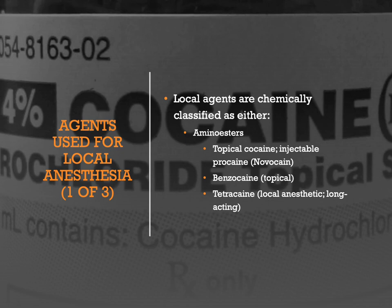Tetracaine is also classified as an amino ester and is a potent, long-lasting local anesthetic often administered prior to cataract surgery. It may also be used in spinal anesthesia. Tetracaine has a rapid onset and a duration of about 90 to 120 minutes.